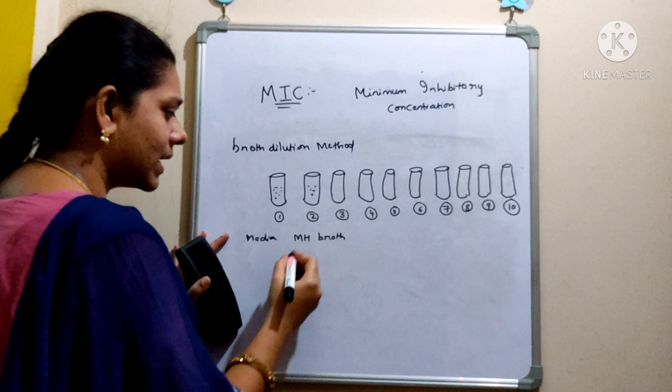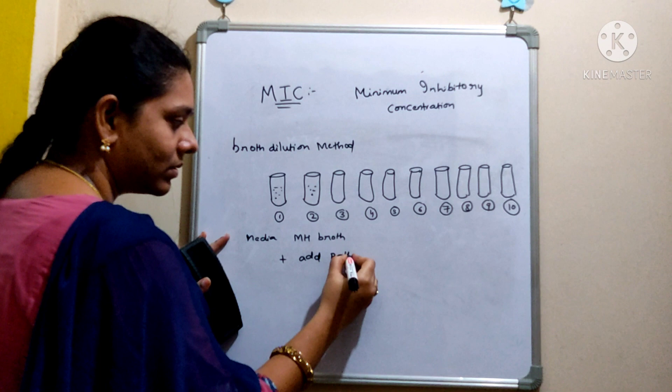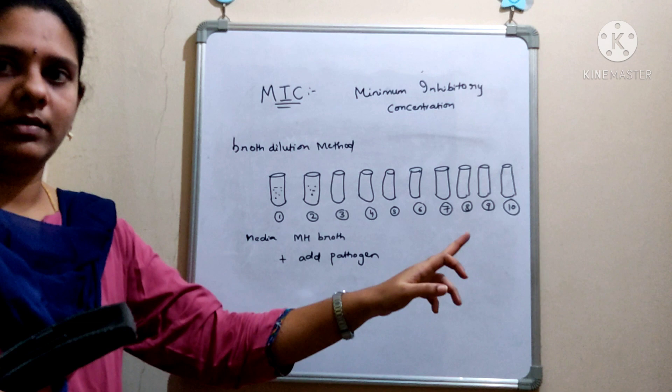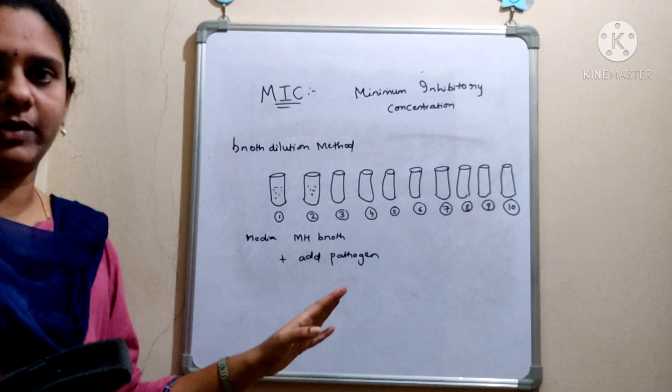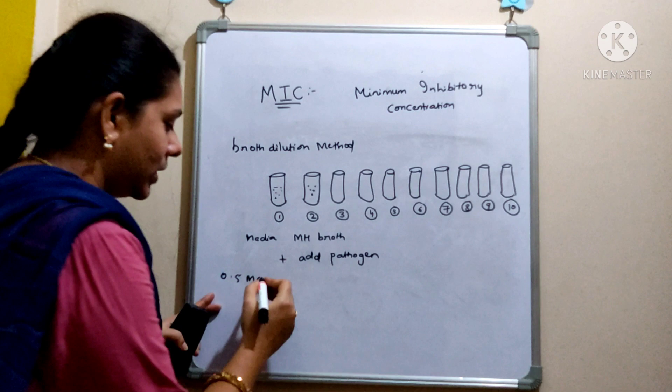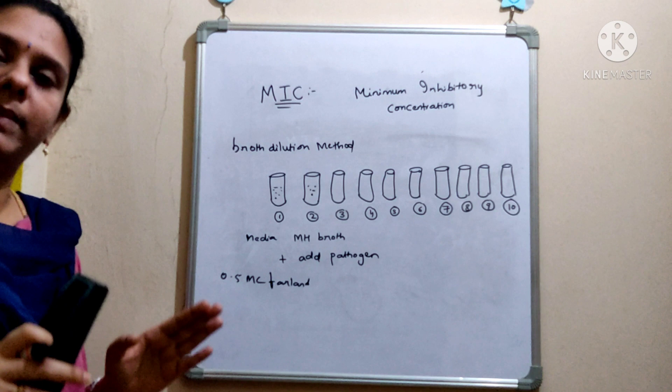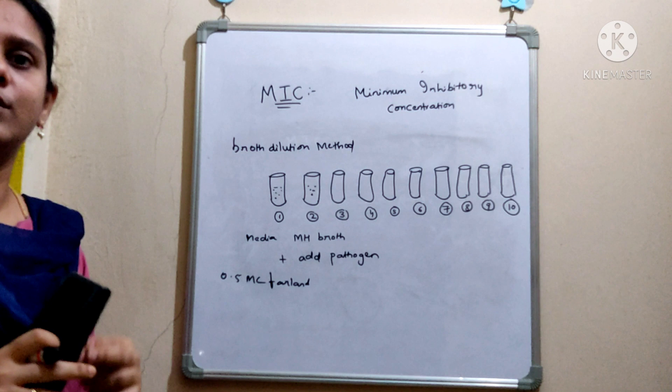MH broth is chosen specifically because it supports the growth of non-fastidious microorganisms and is low in antibiotic inhibitors. MH broth is added to all the tubes. The second step is to add the pathogen — that is, suspend the bacterial colony into all test tubes and then adjust the turbidity to 0.5 McFarland standard, as discussed in the earlier video.